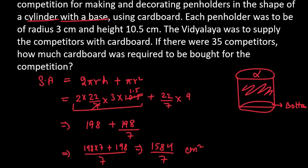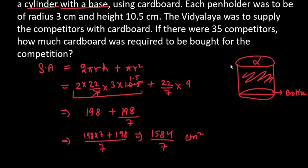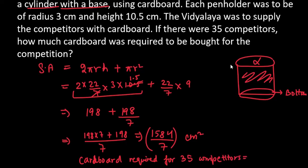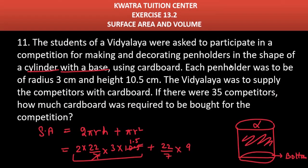This surface area is for 1 cardboard. We have 35 competitors, so we multiply: cardboard required for 35 competitors = (1584/7) × 35. The 7 from the denominator cancels with 35, leaving 1584 × 5, giving the final answer of 7920 cm². This is the answer for question number 11 and the end of Exercise 13.2. We will be starting with Exercise 13.3 in the next video.